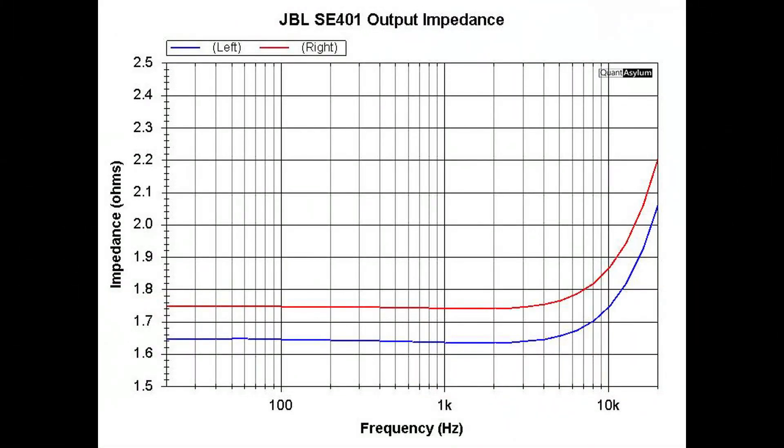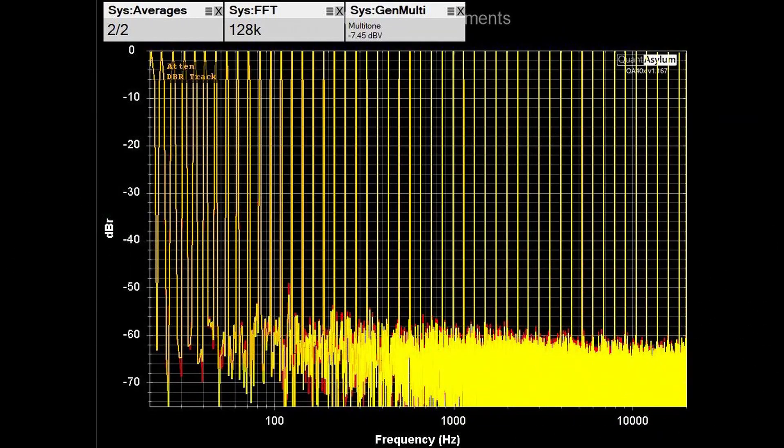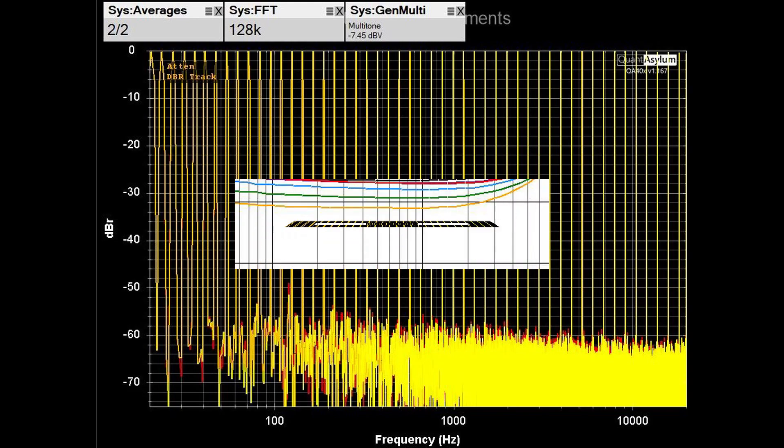This shows the output impedance of the SE401 amplifier for both channels, and it's basically 2.2 ohms, worst case. And if you divide 8 by 2.2 ohms, you would get a damping factor a bit less than 4. Here we have the results of the multi-tone response test, and it's showing about 9 bits of distortion-free range.